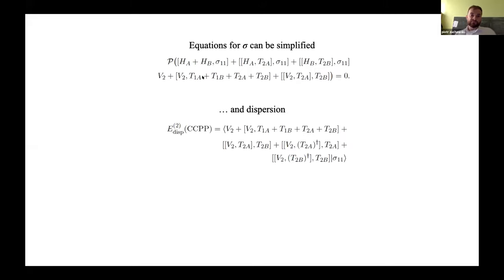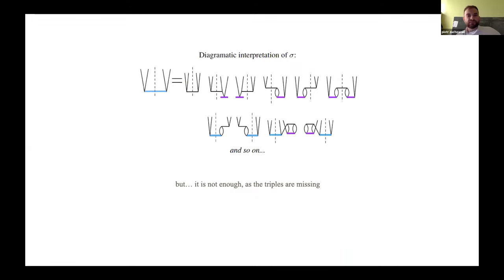So, with this assumption, the equation for sigma can be simplified. And the expression for dispersion is like that. So, sigma can be interpreted diagrammatically as kind of an infinite series of diagrams, which effectively sum up all these intramonomer correlation contributions. So, basically, this is our sigma operator. And this is the very simple sigma zero operator, which means, like, this is Hartree-Fock-based dispersion. And here, we have slightly more complicated expressions. And the magenta vertices means that these are T amplitudes of monomers.